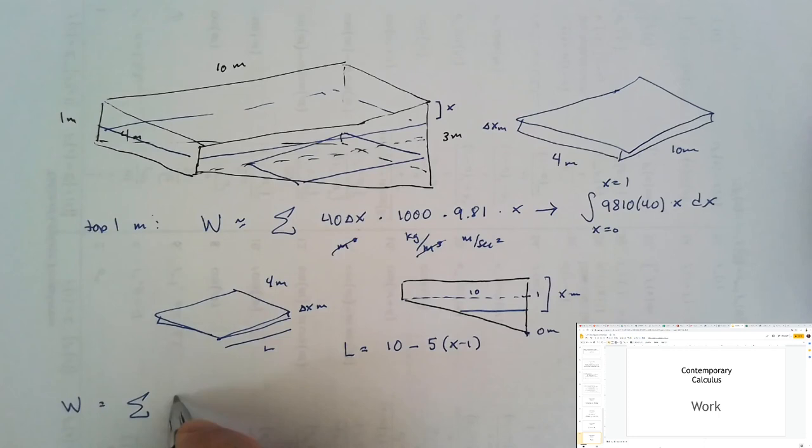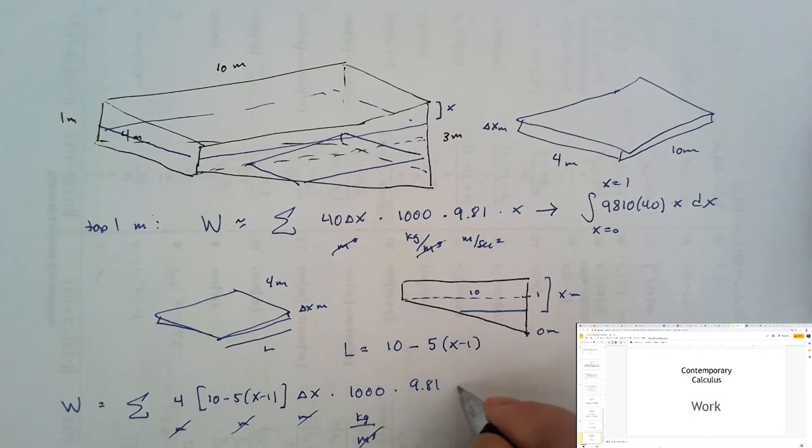So the work done on one of these slices would be the volume of this slice, which would be 4 times 10 minus 5 times the quantity x minus 1 times delta x meters. So this is meters, meters, meters, we have cubic meters, times the density of water, 1,000 kilograms per cubic meter, times 9.81 meters per second squared, times the distance through which this gets raised, x.